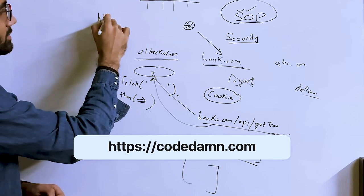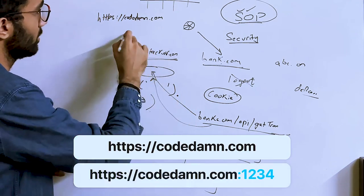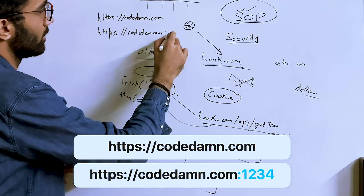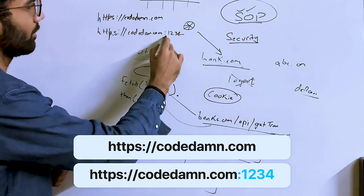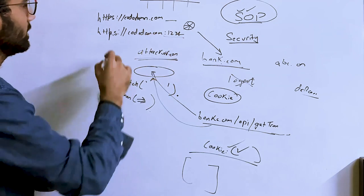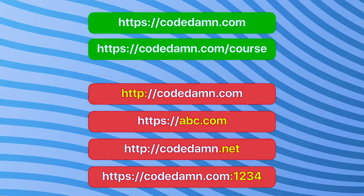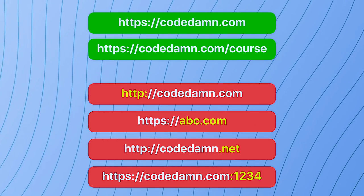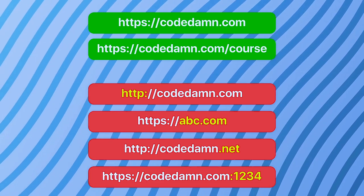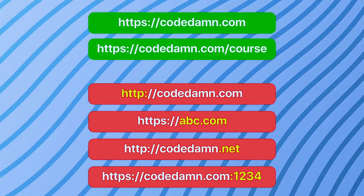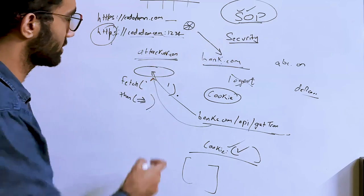For example, `https://codem.com` is a different origin from `https://codem.com:1234` because they have different port numbers. Similarly, HTTP and HTTPS are different origins, different domains are different origins, and different top-level domains are different origins as well.